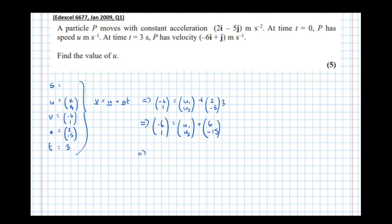At this point we can form two equations, one for the i coordinates and one for the j coordinates. Looking at the top line we get -6 = u₁ + 6.